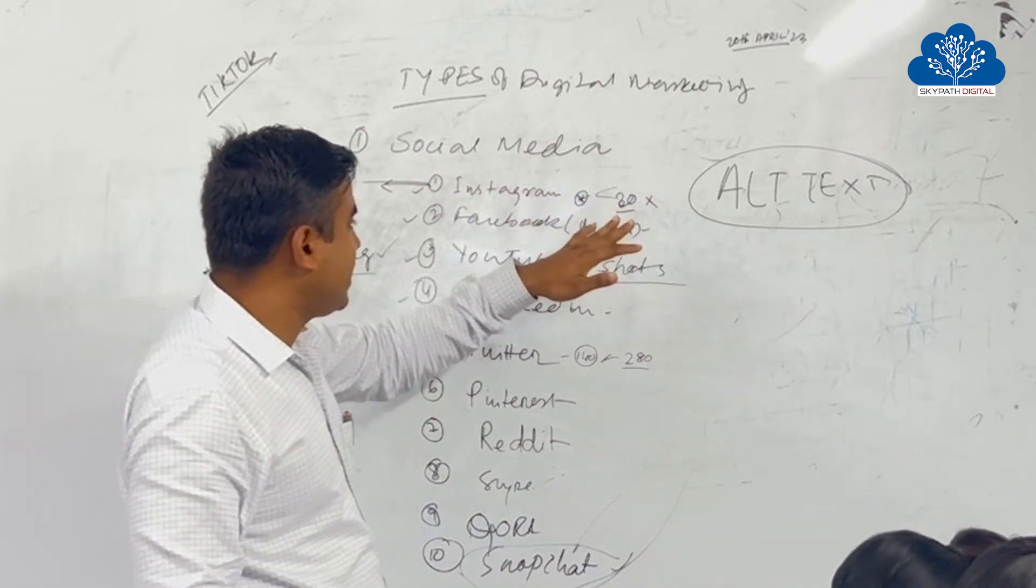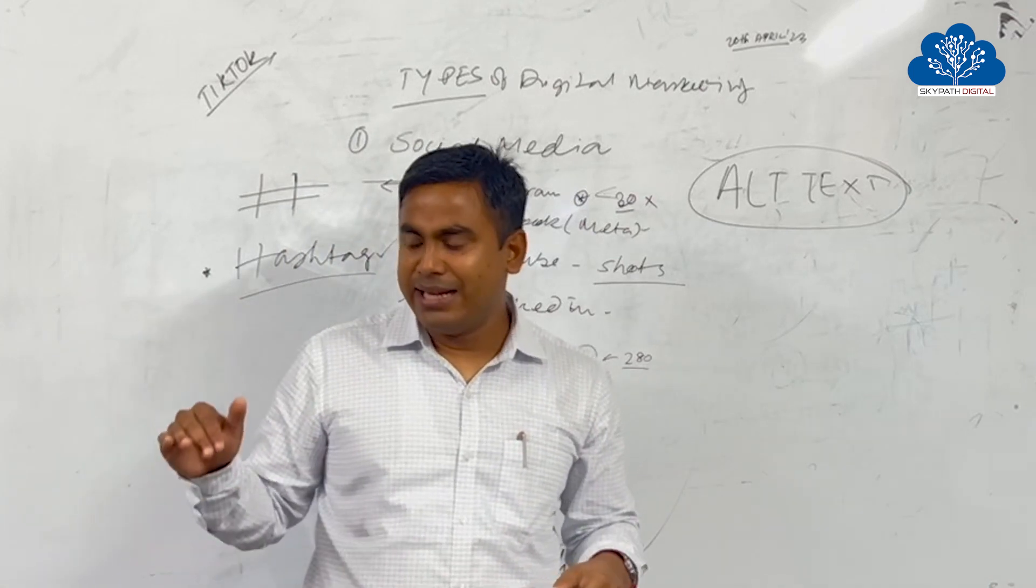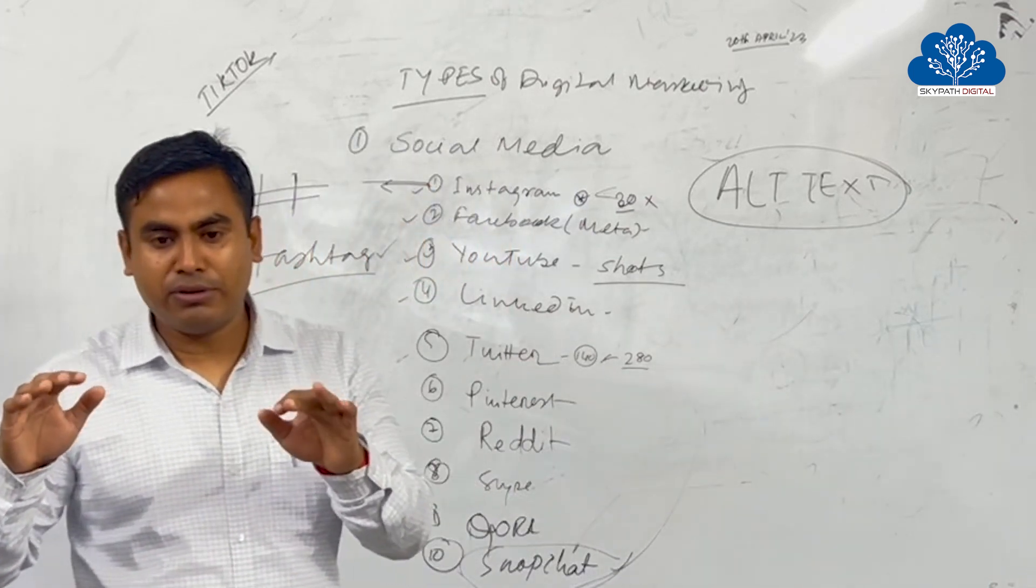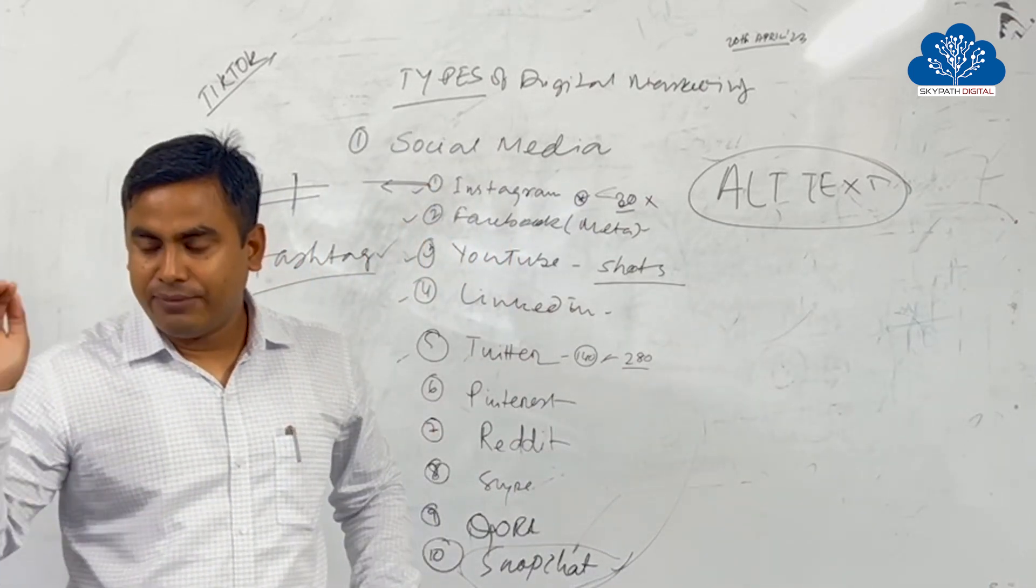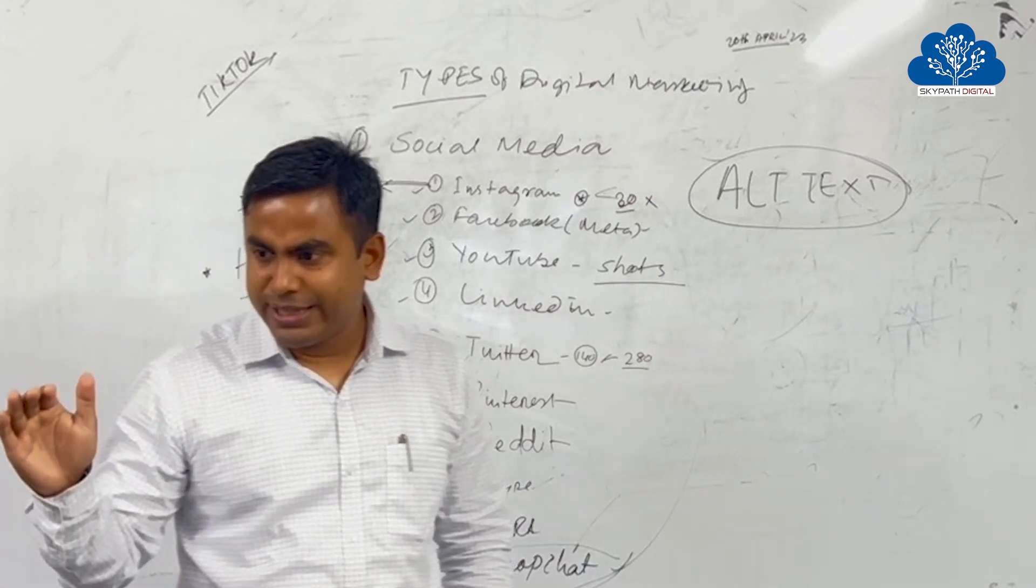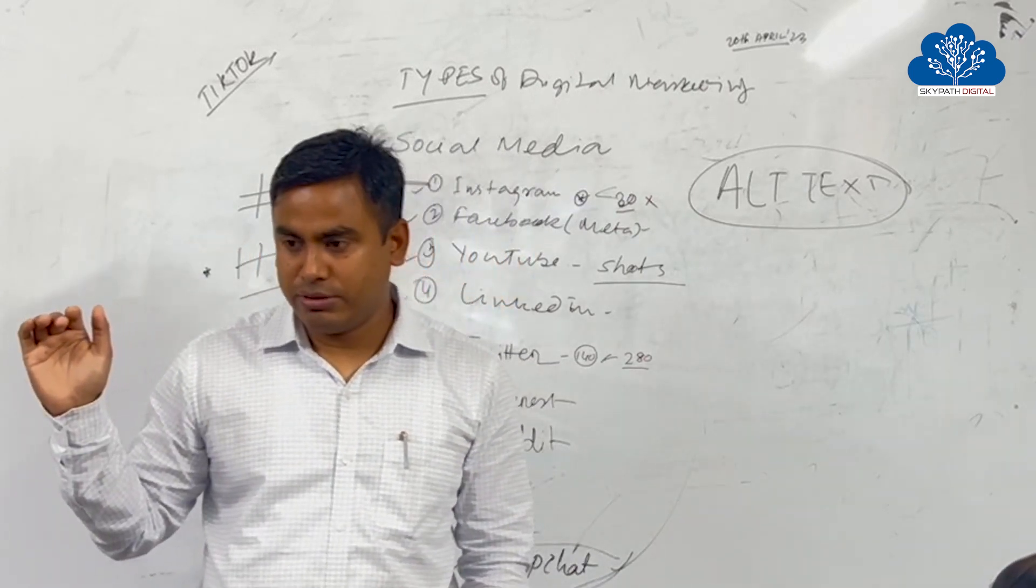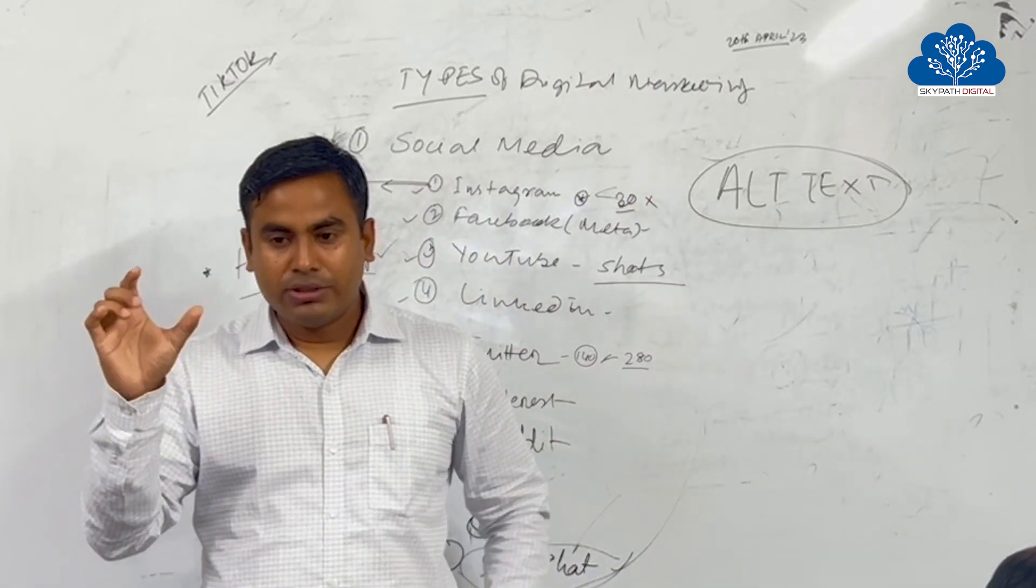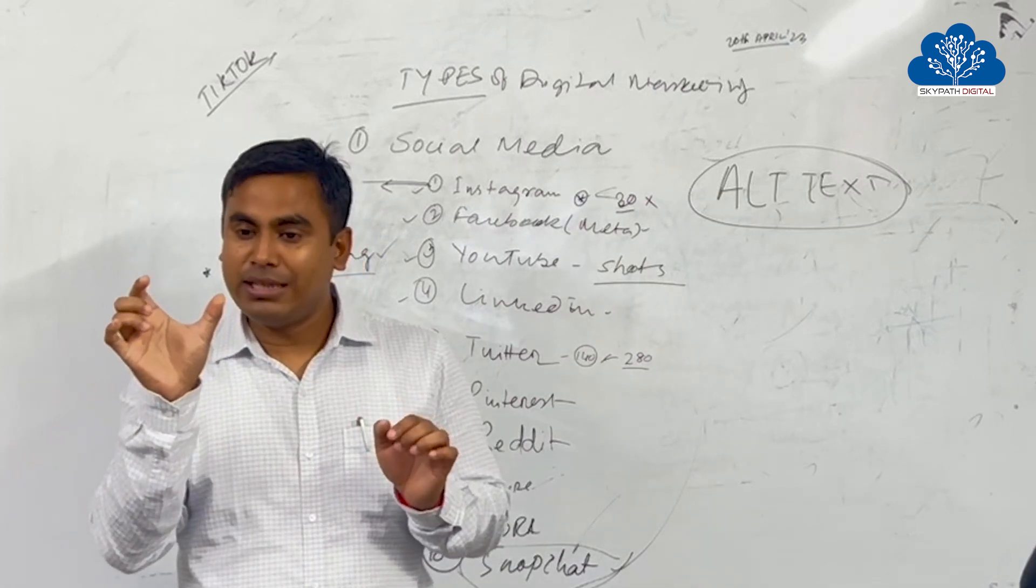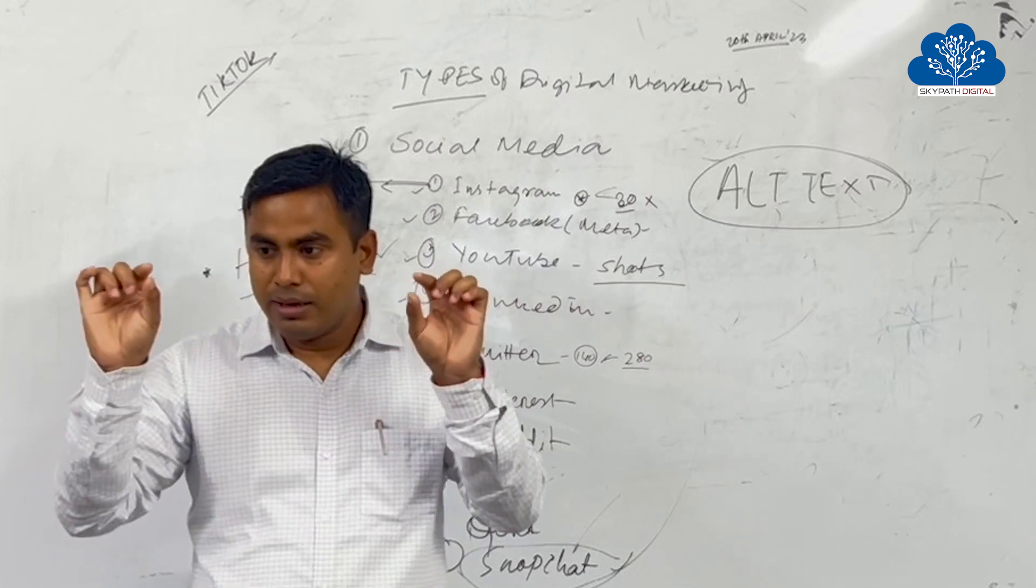So in Instagram there are character limits in bio also. In headline, there are 40 character limits. Then the bio takes 125. You can use hashtags also in your bio. Bio is very important in any social media. Whatever you are doing, you should write in proper points.